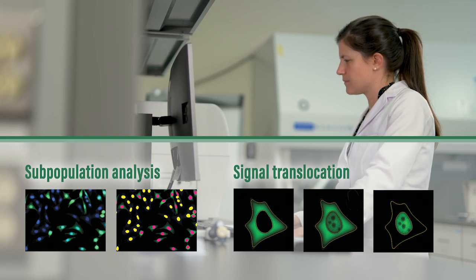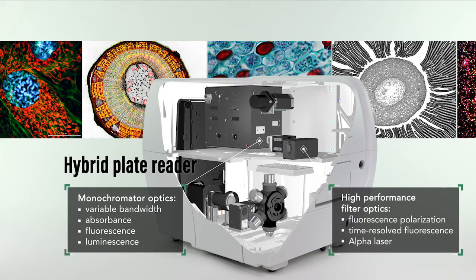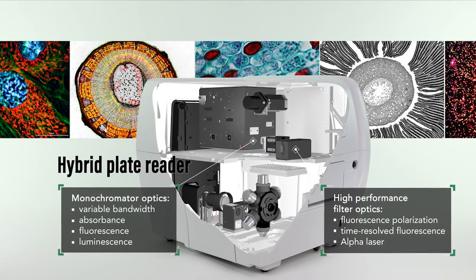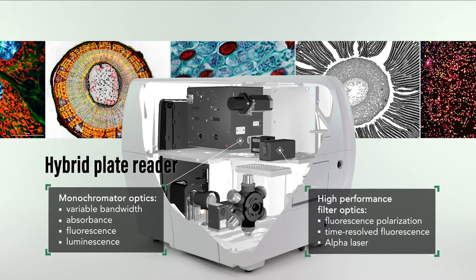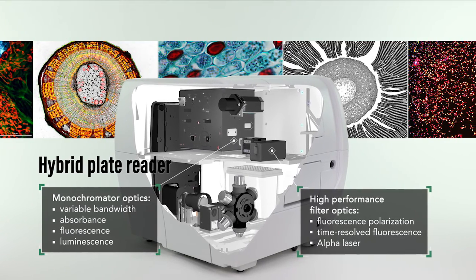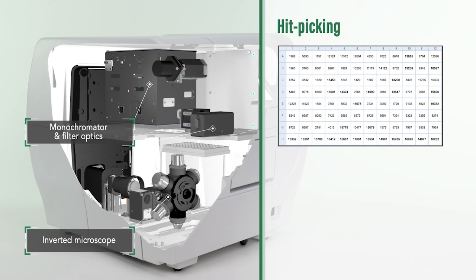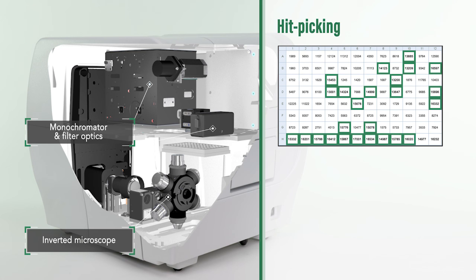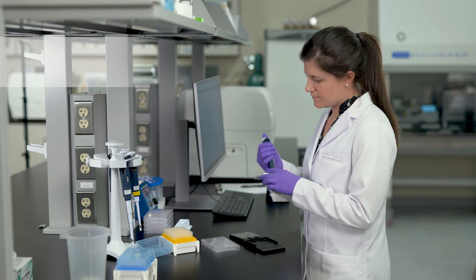With its patented combination of imaging and multimode detection, Citation is an advanced plate reader that delivers both the flexibility and performance you need for any microplate assay in your lab. Multimode detection used in conjunction with imaging provides effective hit-picking for increased efficiency and throughput. For example, Gen5 quickly identifies GFP-positive wells; only those wells are imaged, saving time and computer hard drive space.